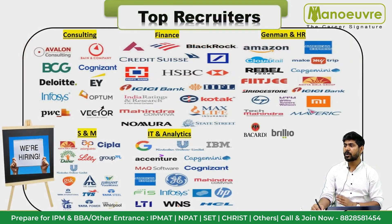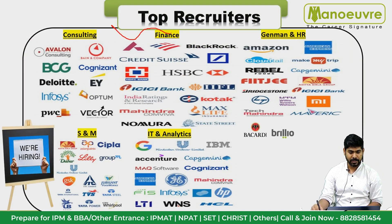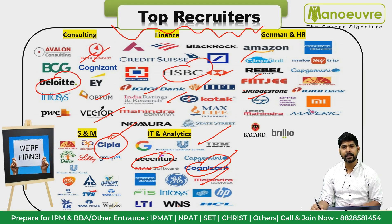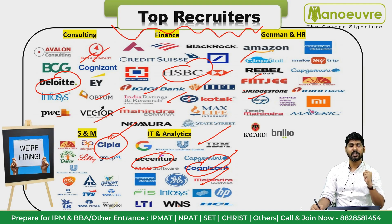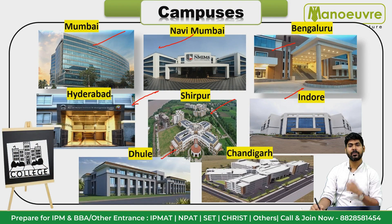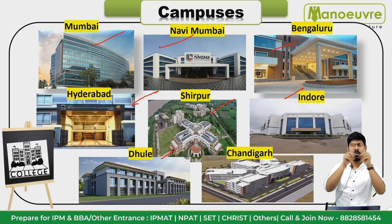Motivation should not be a problem. Look at the top recruiters who come for placements — companies like Cognizant, Accenture, Deloitte, HSBC, and many more. When you see those placement names, motivation will come automatically. Go to the official NMIMS website, check out the campus placements. Once your goal and target are clear, your strategy and motivation will be set by default.